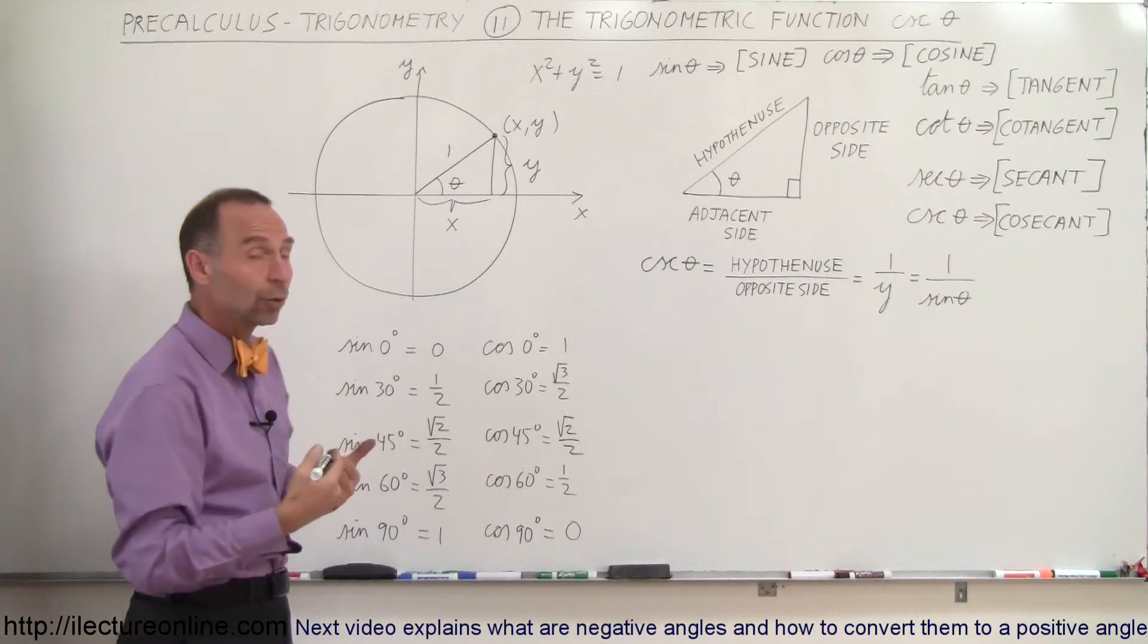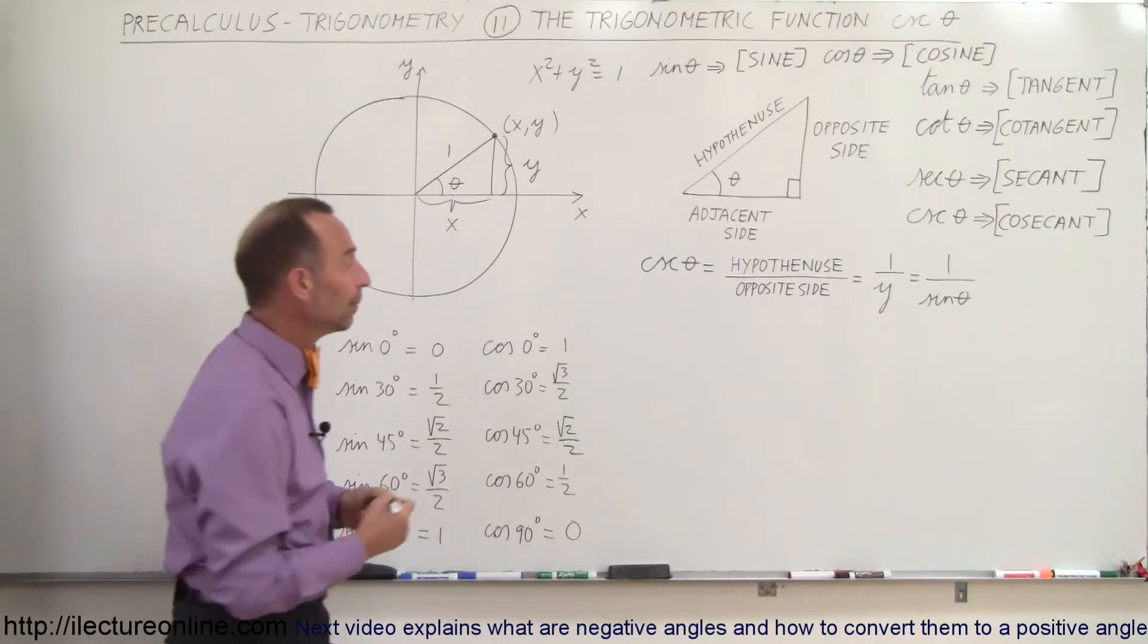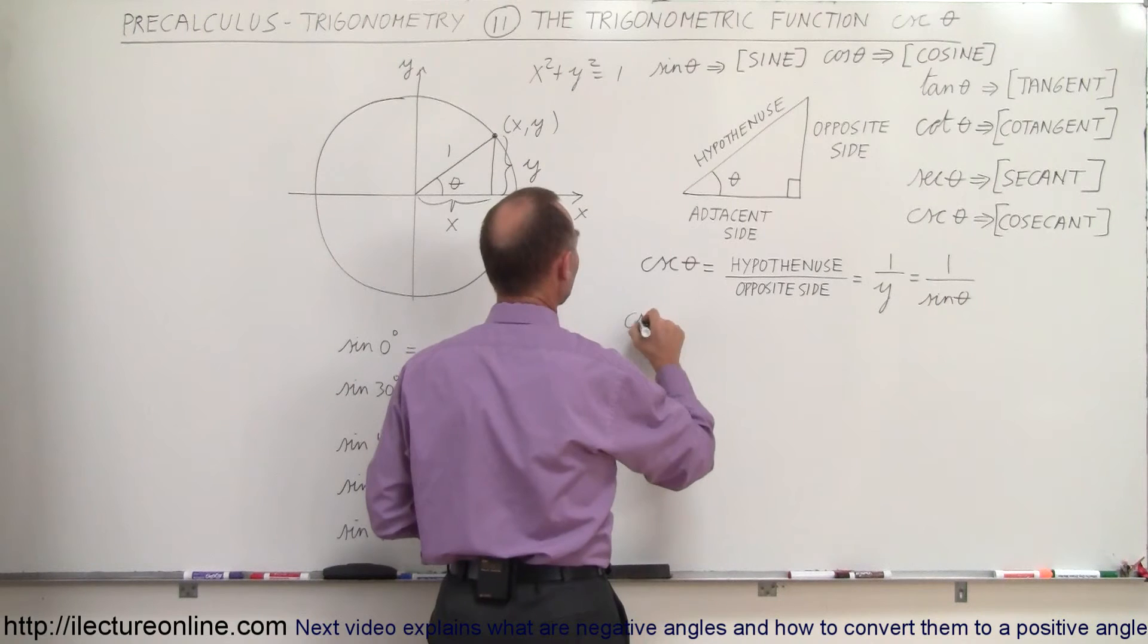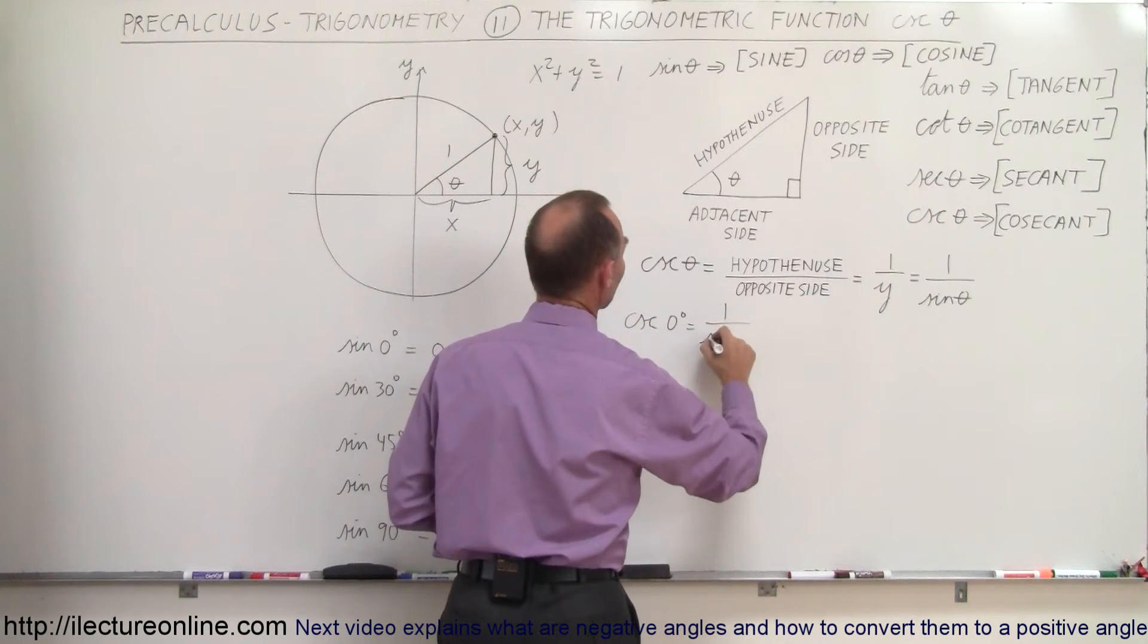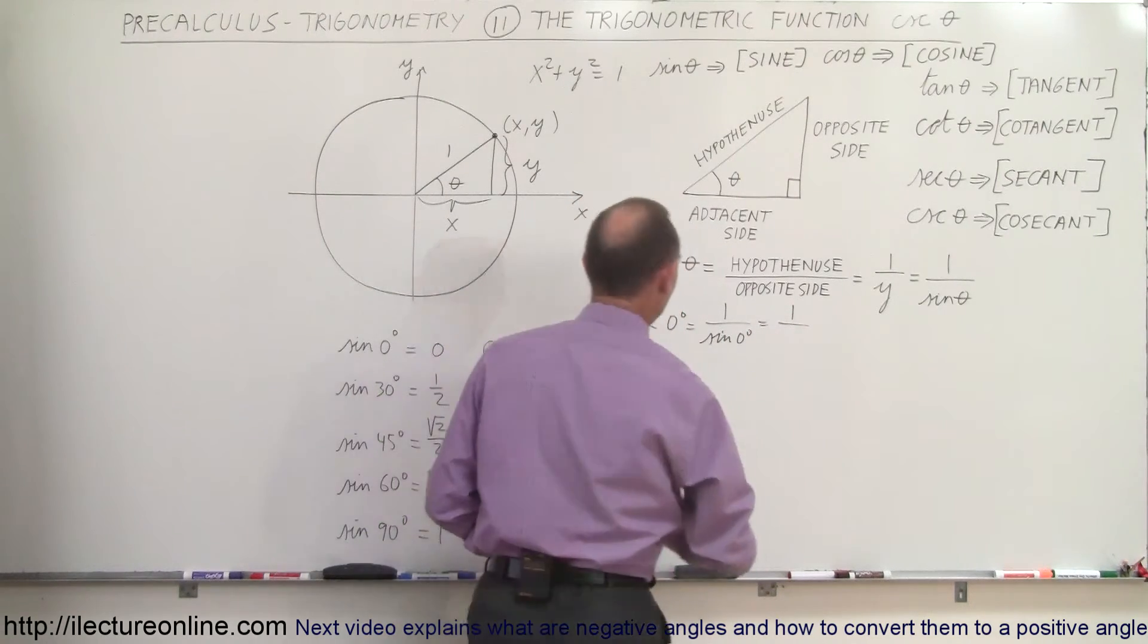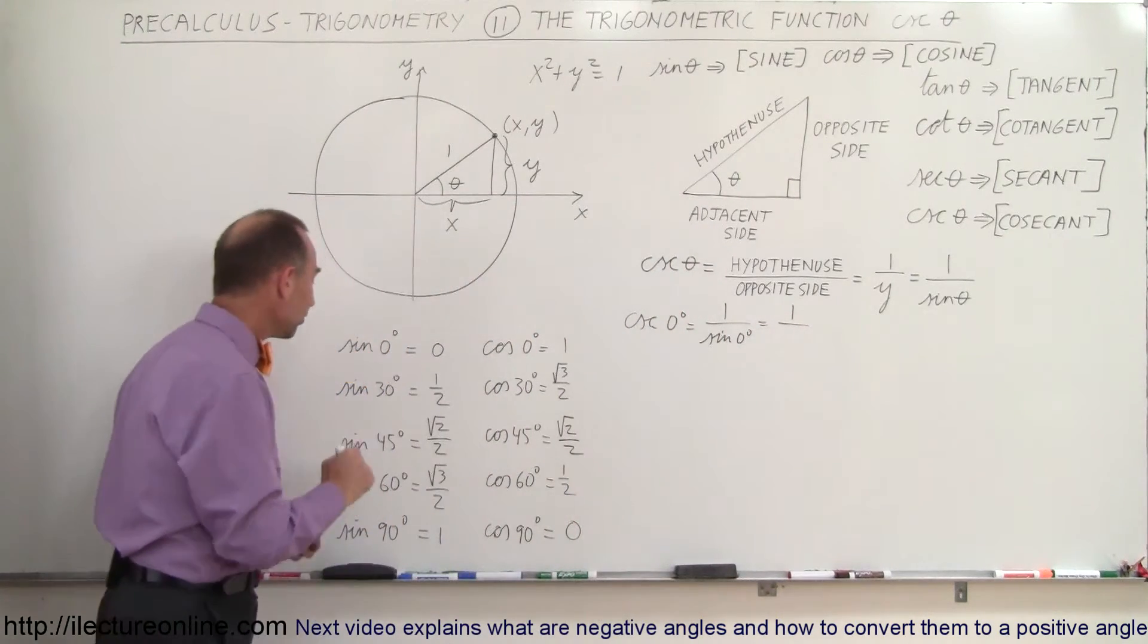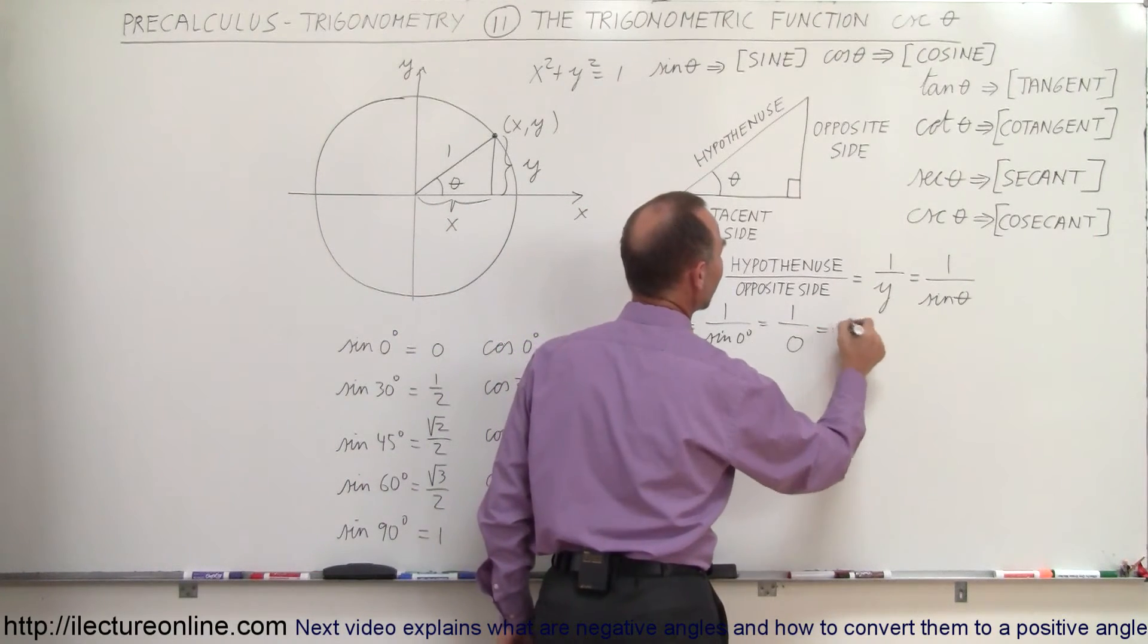Knowing that, let's find out what the cosecant of theta is for various values of the angle theta. For example, the cosecant of zero degrees is equal to one over the sine of zero degrees, which is one over... and the sine of zero degrees is equal to zero, so one divided by zero is infinity.